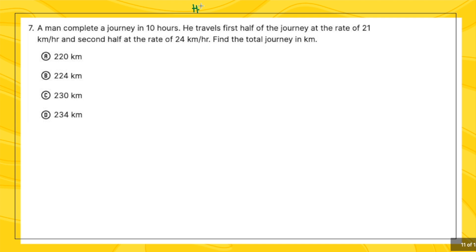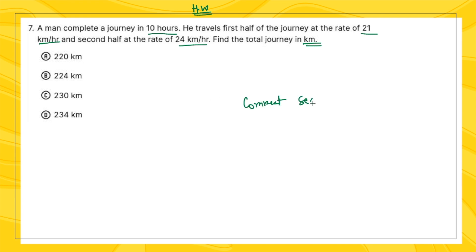Now for the homework question of this video: 'A man completes a journey in 10 hours. He travels the first half of the journey at 21 km/h and the second half at 12 km/h. Find the total journey in kilometers.' Total time is given, speeds are given for different halves — you have to find the total distance. Try to solve it and let me know your answer in the comments.